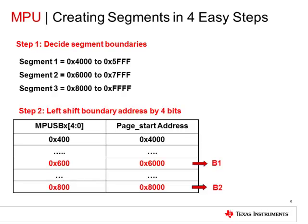Next, we will need to figure out the bit settings that need to go into the MPU segment boundary register to configure these boundaries. This is done by right shifting the address by four bits. The user's guide also has a listing of various segment boundary settings for different addresses.